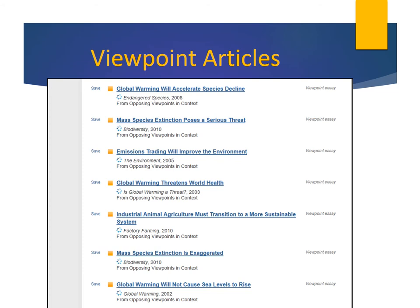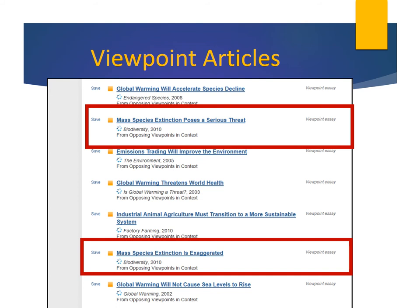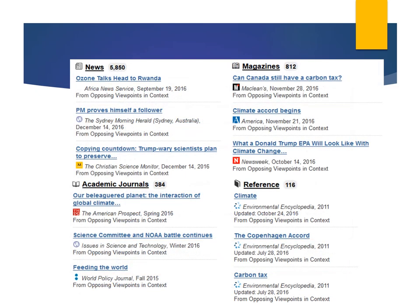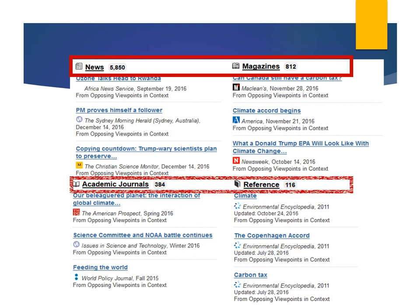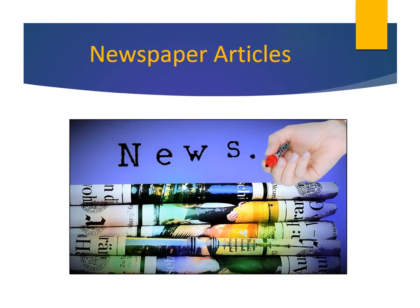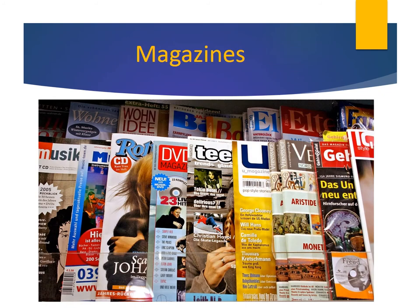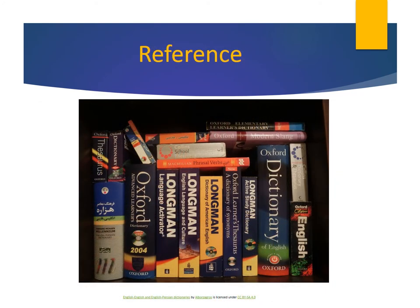We see this a lot in the Opposing Viewpoints database — for example, 'Mass species extinction is exaggerated' alongside 'Mass species extinction poses a serious threat.' Scrolling down, here are bucket pages with links to newspaper articles, magazines, academic journals, and reference articles. News articles are particularly good sources for locating current, up-to-date information, since newspapers are published so frequently. Opposing Viewpoints includes full-text articles from hundreds of popular magazines such as Time, Newsweek, and US News and World Report. Reference materials contain factual information and topic overviews, similar to what you would find in an encyclopedia or reference book. They are good sources of background material for your research.